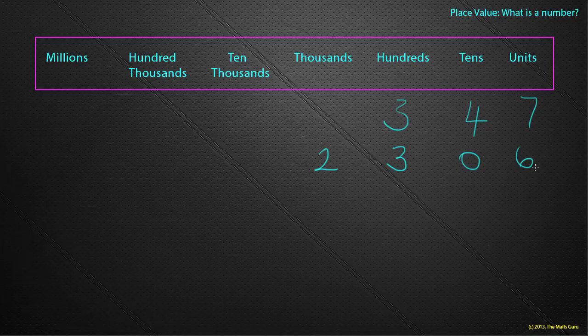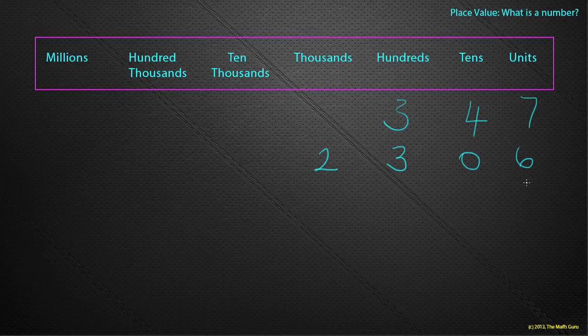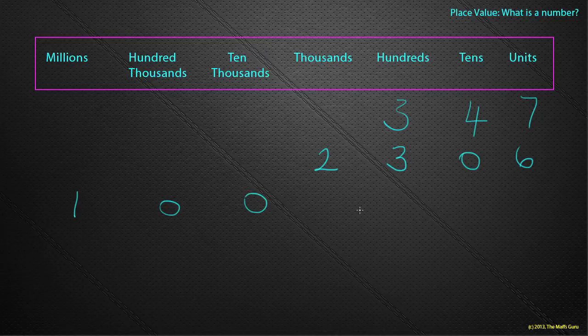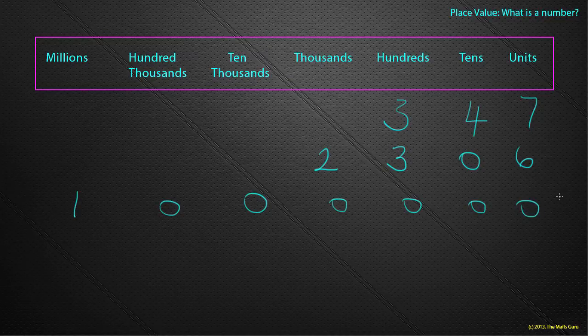I've always wanted to be a millionaire. So what would happen if I had one million? Well, the way we actually say the numbers tends to give us a hint as to how to work this out. So we have 1 in the million column and zeros all other places.